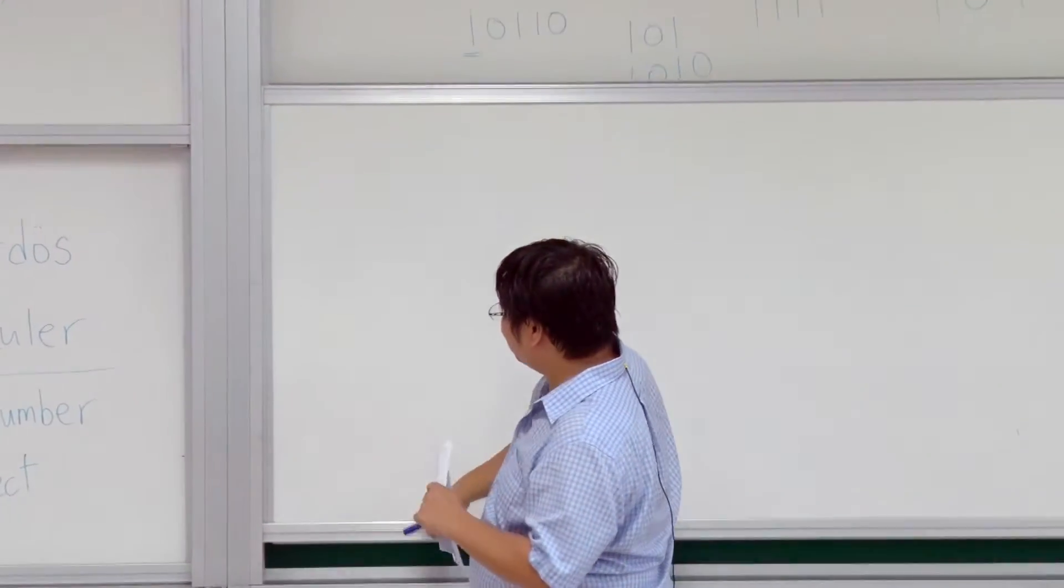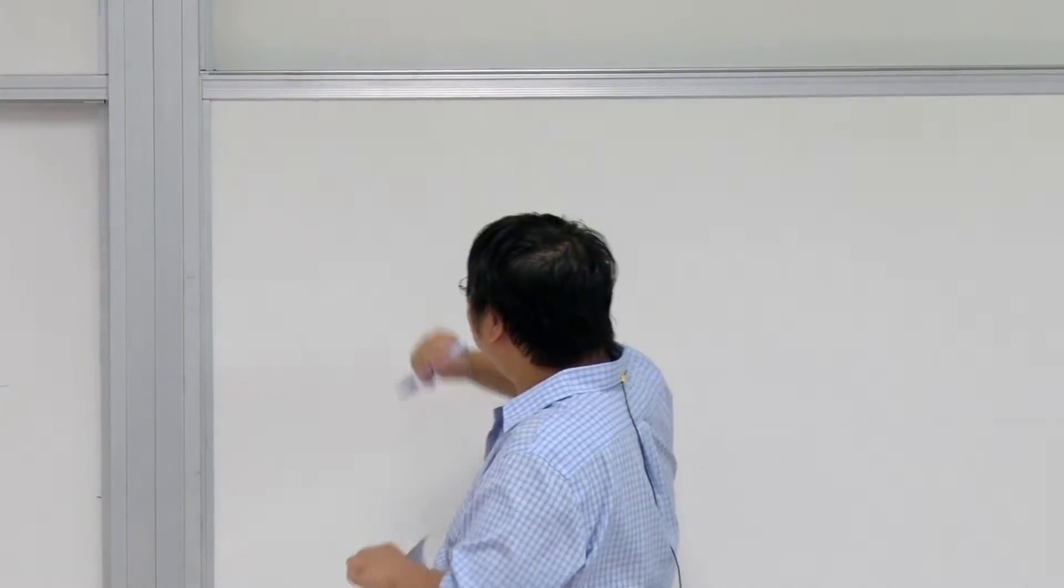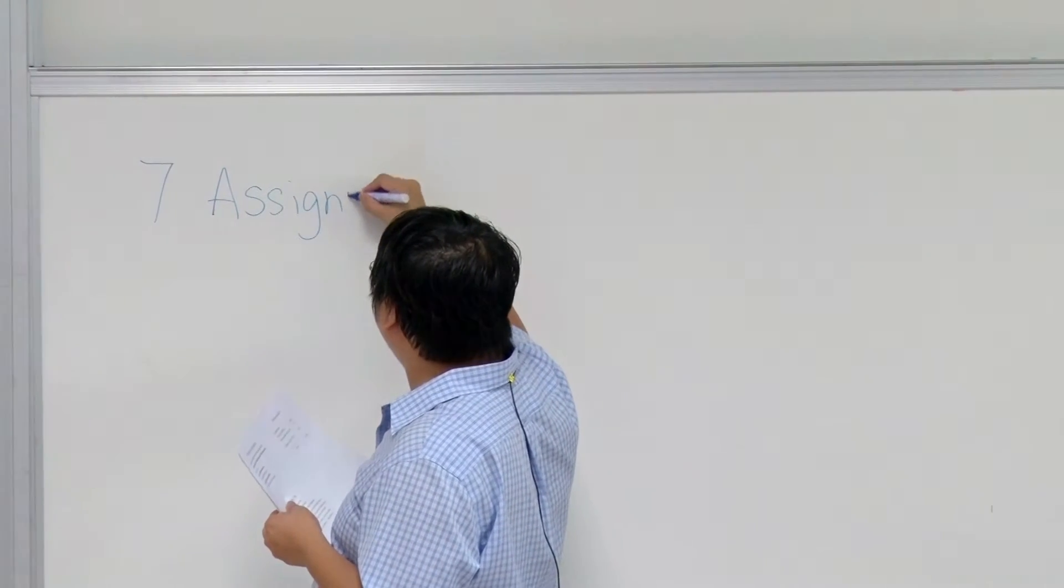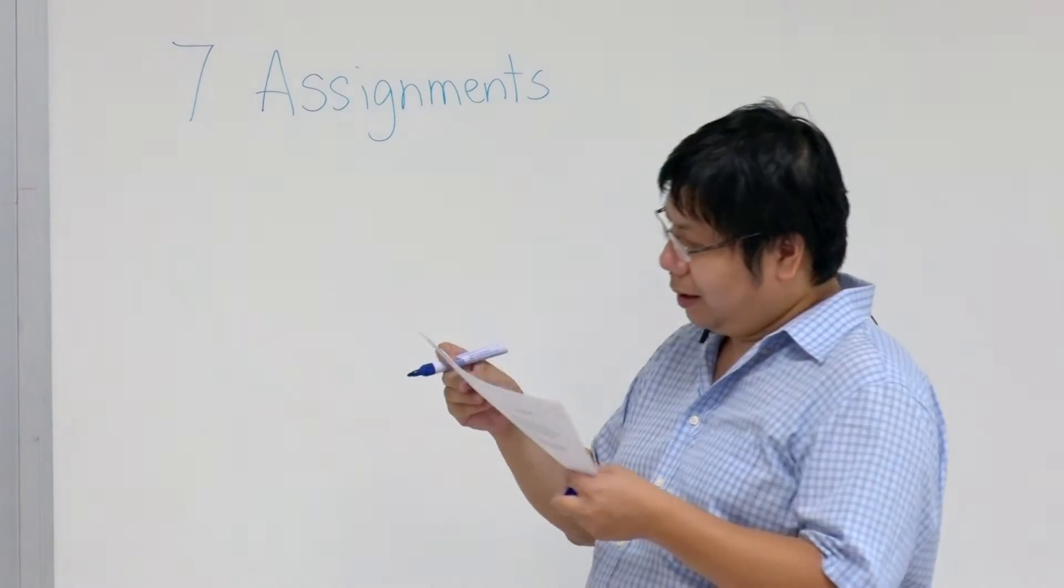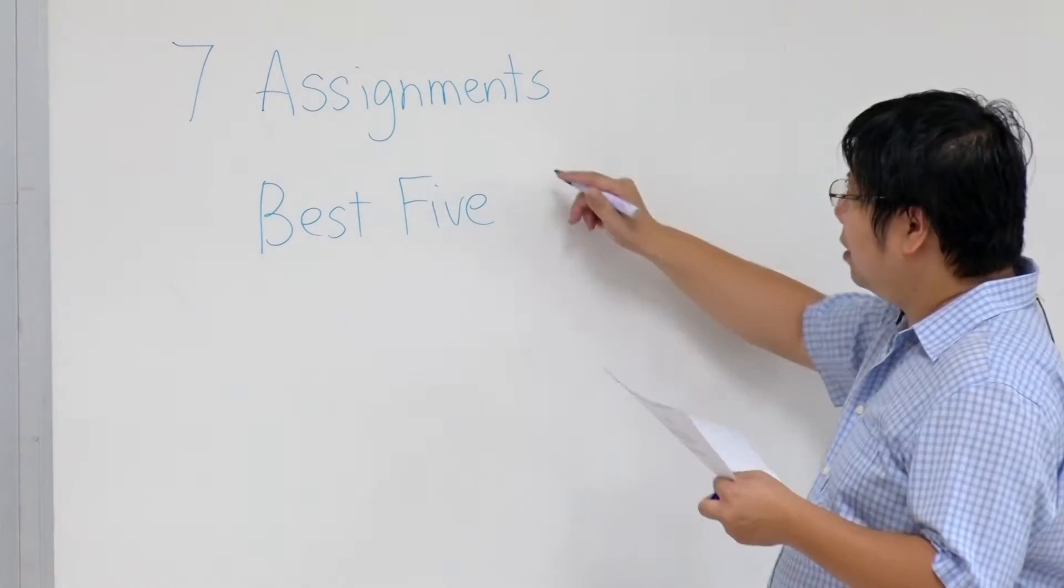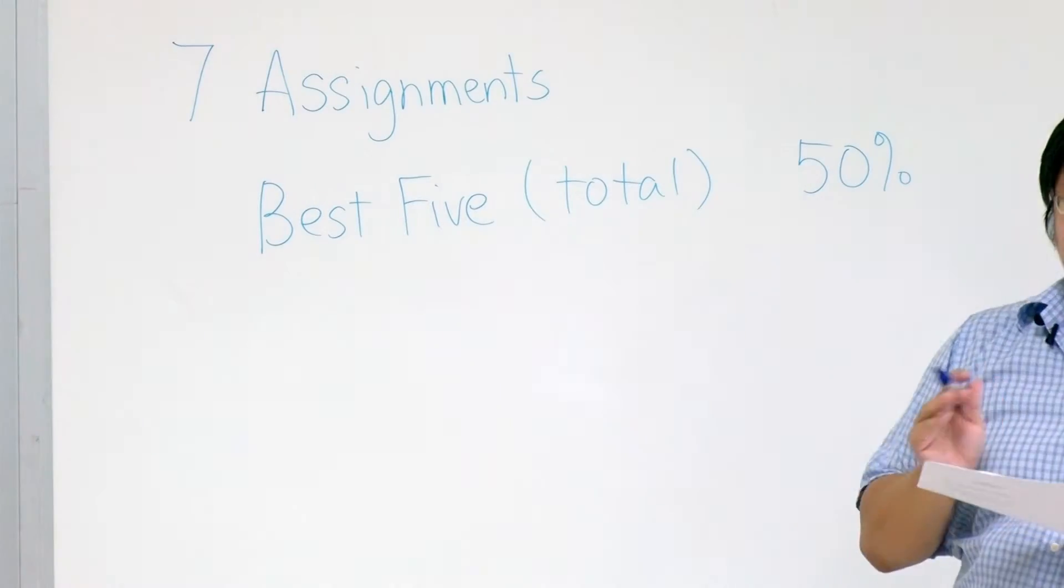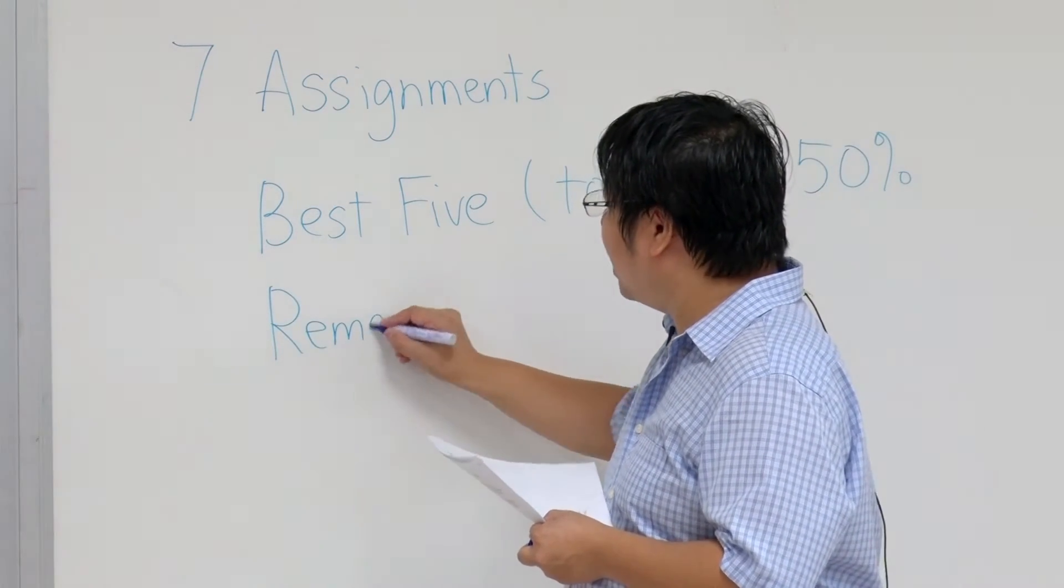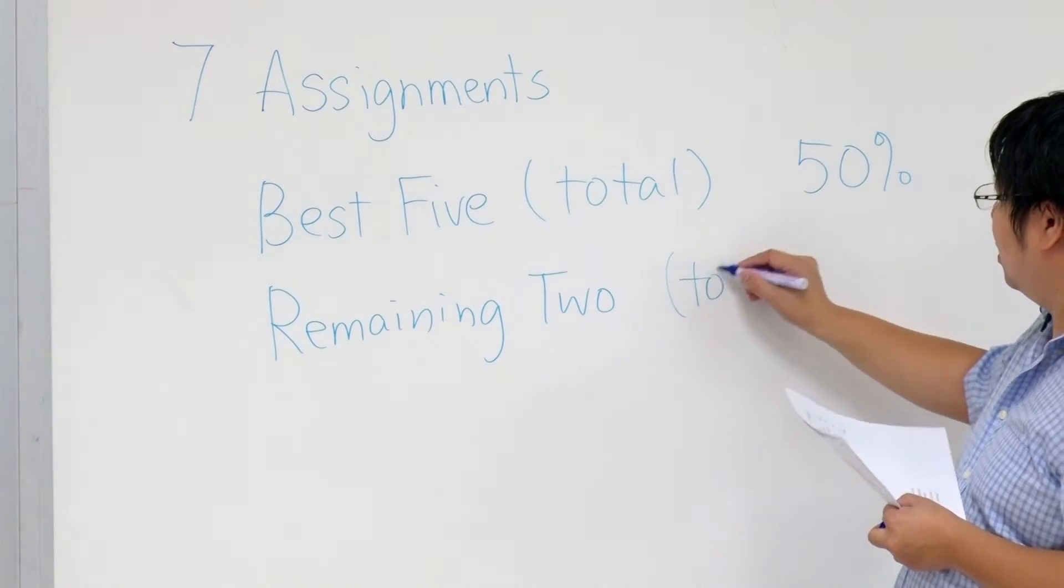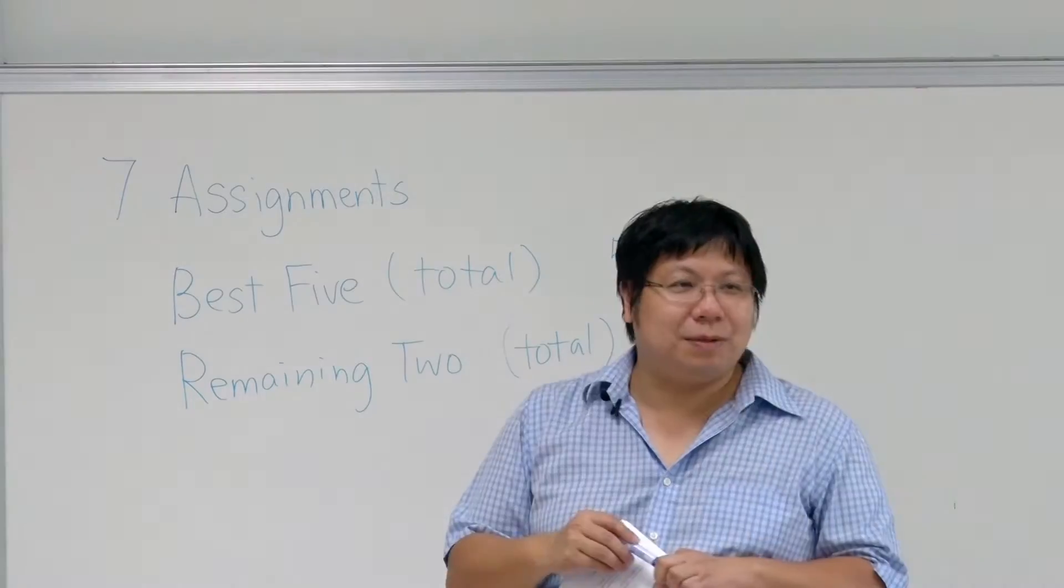Assessment. How do we evaluate your performance? This is what we are doing all these years. So we have seven assignments. And the best five of them, in total, it will contribute 50% of the marks. And the remaining two, in total, it will contribute only 5%. So we will calculate automatically which assignment that you score the best.